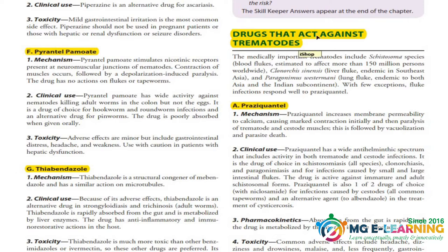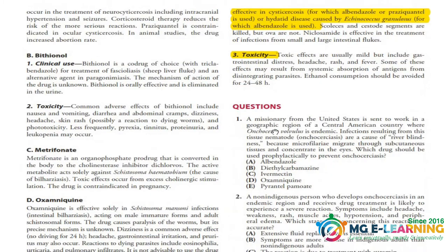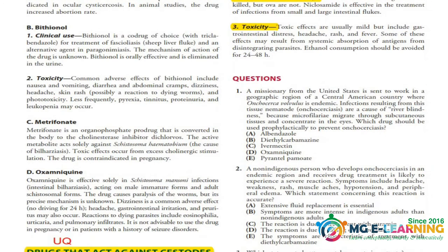Next are drugs that act against trematodes. The key drug here is important — read its mechanism of action, clinical uses, pharmacokinetics, and toxicity. The other drugs in this section you can just read through; they are not as critical.